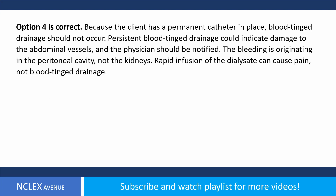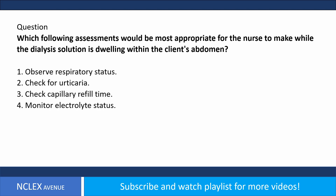Answer: option four is correct. Because the client has a permanent catheter in place, blood-tinged drainage should not occur. Persistent blood-tinged drainage could indicate damage to the abdominal vessels, and the physician should be notified. The bleeding is originating in the peritoneal cavity, not the kidneys. Rapid infusion of the dialysate can cause pain, not blood-tinged drainage.